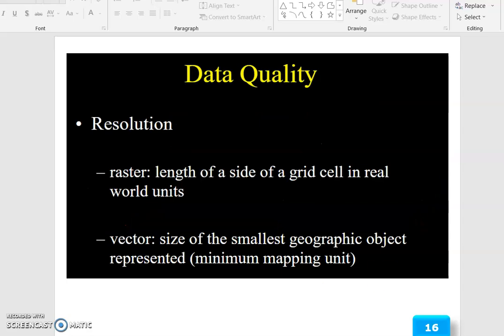Resolution in data quality: for raster data, it's the length of a side of a grid cell in real world units. For vector data, it's the size of the smallest geographic object represented, the minimum mapping unit.